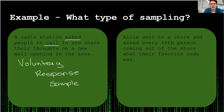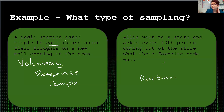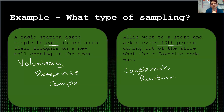Last example: Allie went to a store and asked every tenth person coming out of the store what their favorite soda was. Any person in the store could be chosen — it's random — but rather than just walking up to people, she's asking every tenth person. When we ask every tenth person, this shows we have a system in mind. So this is a systematic random sample.